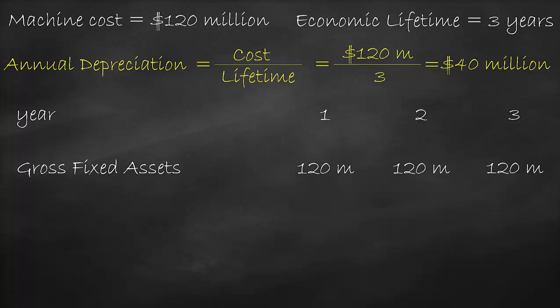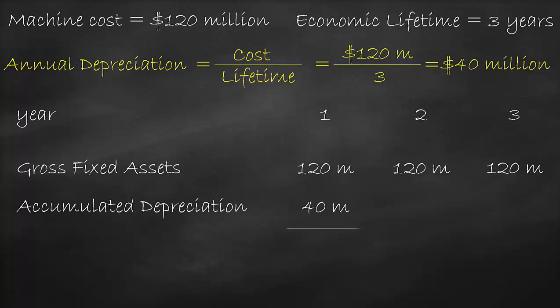In the first year, we have used the machine for 1 year only, meaning depreciation is $40 million. Consequently, the value of the machine after 1 year is $120 million minus $40 million, which is equal to $80 million, which is the net fixed asset value for year 1.